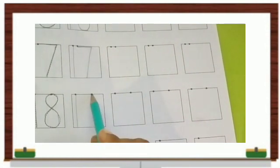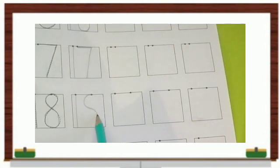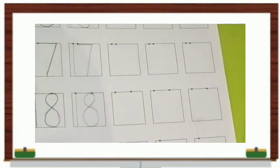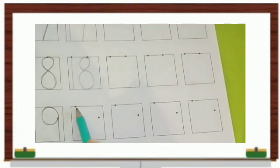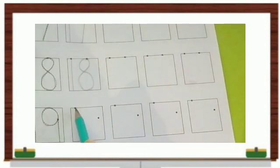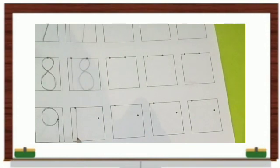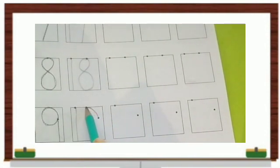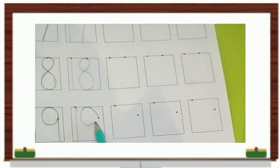So we write 1 and then 8, which makes number 18. Next is after 18 is 19, 1 and from the second dot you write number 9, 19.